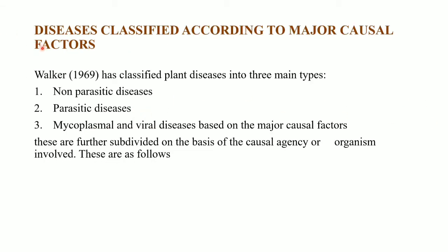The diseases which are classified according to the major causal factors: Walker (1969) has classified plant diseases into three main groups — first, non-parasitic diseases; second, parasitic diseases; and third, mycoplasmal and viral diseases. These are further subdivided on the basis of causal agency or organism involved.